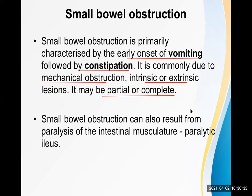Small bowel obstruction can also result from paralysis of the intestinal musculature, known as paralytic ileus. In some textbooks it is called adynamic obstruction. Dynamic means peristaltic movement is still present, whereas adynamic means there is no peristaltic movement — the intestine is already paralyzed.